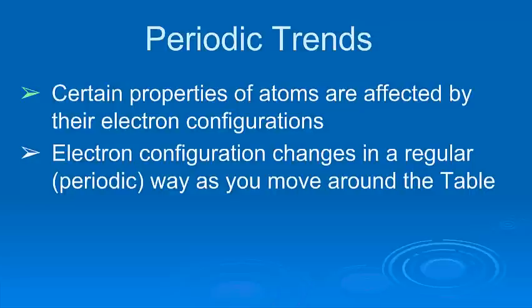As you move across, it's a very regular change. If you go down a group, for example, down the alkali metal group, you have electrons, the outermost electrons will be in 1s1, then 2s1, 3s1, 4s1, 5s1. It's a very regular change.